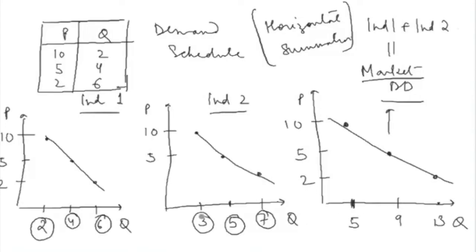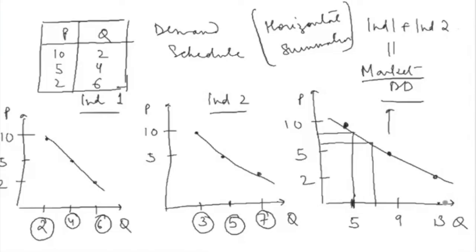Note that you are doing horizontal summation — you are not doing vertical summation. You keep price constant and add quantity at that price. This results in the market demand curve being flatter than the individual demand curves. Flatter means that for a given change in price, the change in quantity is higher. This makes sense because in the market, all individuals come together, so the total change in quantity demanded is higher than for any single individual.